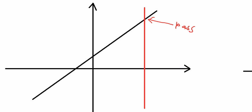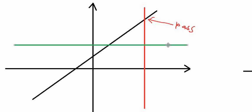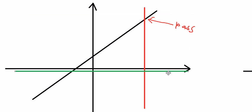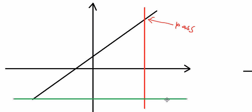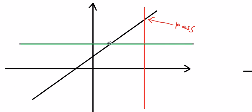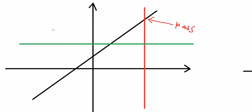Now I draw the green line. I move the green line up and down. You can see that this green line intersects the vertical line at only one point. So I say this is pass.